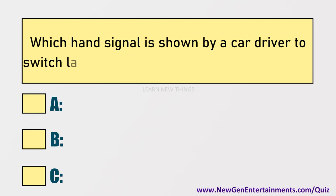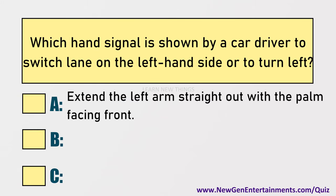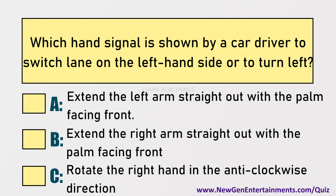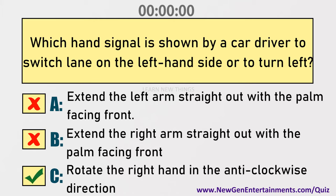Which hand signal is shown by a car driver to switch lane to the left or to turn left? Answer: Option C, Rotate the right hand in the anticlockwise direction.